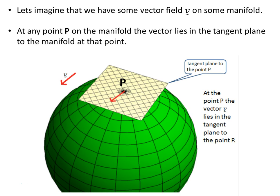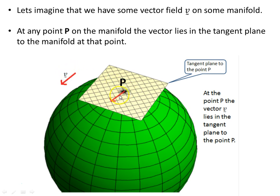Let's imagine that we have some vector field V on some manifold — the surface of our sphere here will serve as our manifold. At any point P on the manifold, the vector lies in the tangent plane to the manifold at that point. So at some point P on the manifold, we have a vector V, and it lies in the tangent plane attached at the point P.